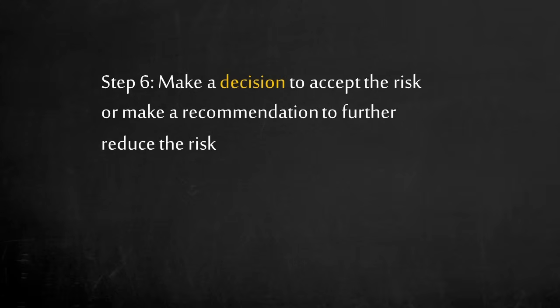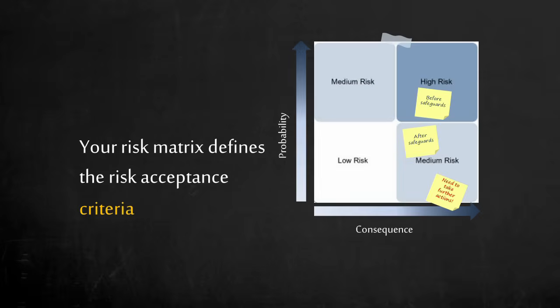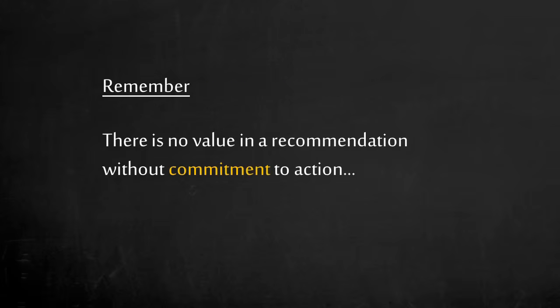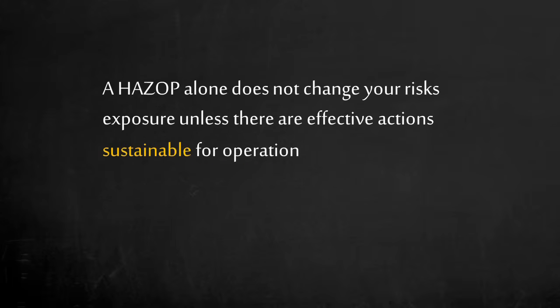Step 6: The final step is to make a decision to accept the risk or make a recommendation to further reduce the risk. By lowering the probability using a safeguard, the risk is lowered. Your risk matrix defines the risk acceptance criteria. Depending on the risk, you may need to make a recommendation when the risk is not acceptable. Remember, there is no value in a recommendation without commitment to action. It is important that each recommendation gets buy-in from both engineering and operations. A HAZOP alone does not change your risk exposure unless there are effective actions sustainable for operation.